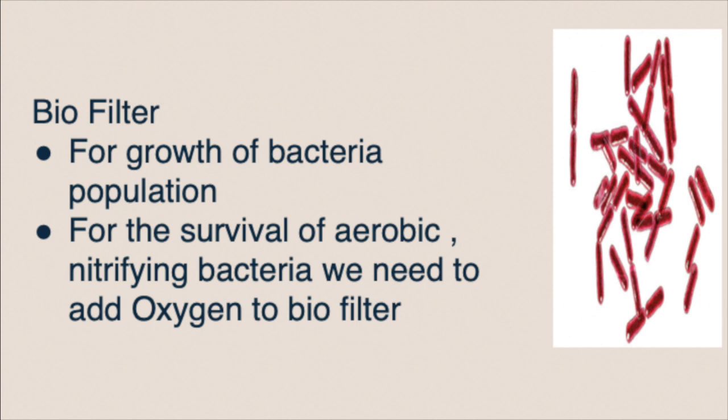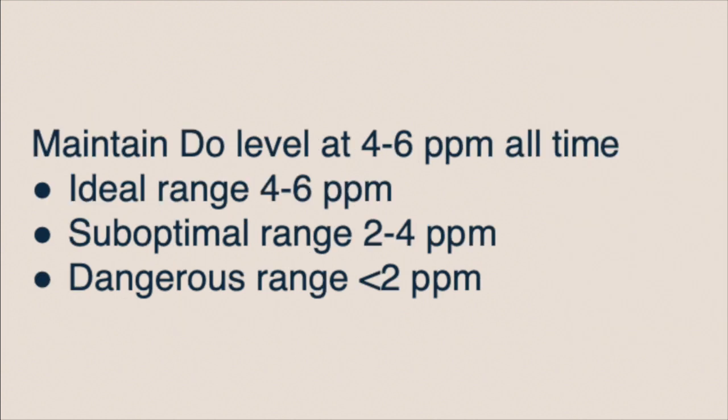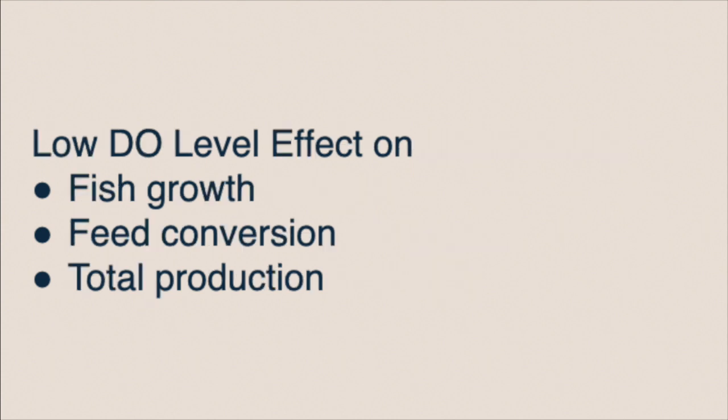Oxygen keeps bacteria healthy and the bacteria population growing. The optimal DO level is 4 to 6 ppm. At 2 ppm, oxygen is too low, which negatively affects fresh growth, feed conversion, and total production.